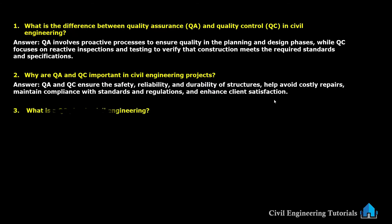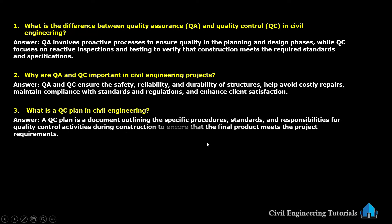Next: what is a quality control plan or QC plan in civil engineering? A QC plan is a document outlining the specific procedures, standards and responsibilities for QC activities during construction to ensure that the final product meets the project requirements.